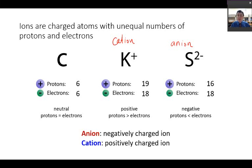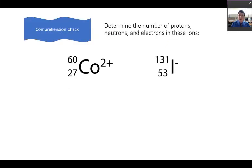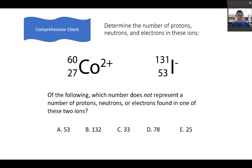That is the content for this video. Now I'd like you to practice on a problem: of the following, which number does not represent a number of protons, neutrons, or electrons found in one of these two ions? Pause the video now, try this on your own, and then resume and I'll walk you through a solution.